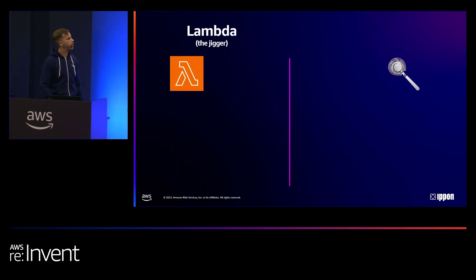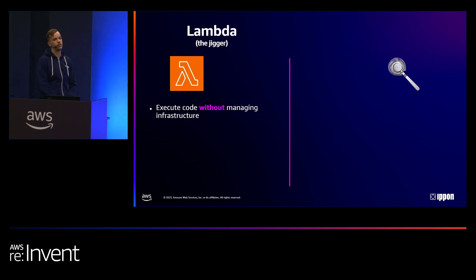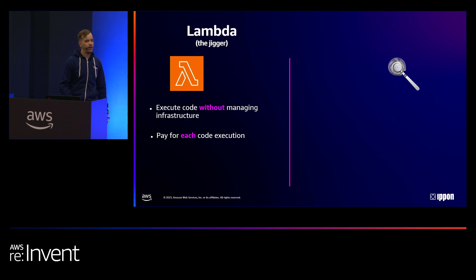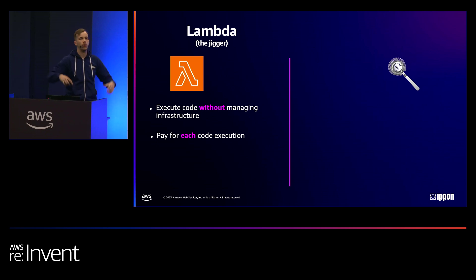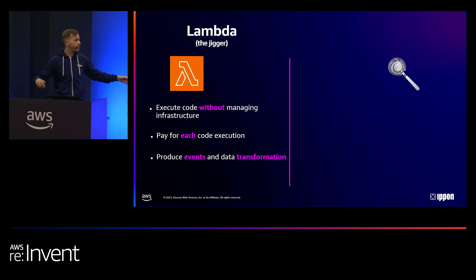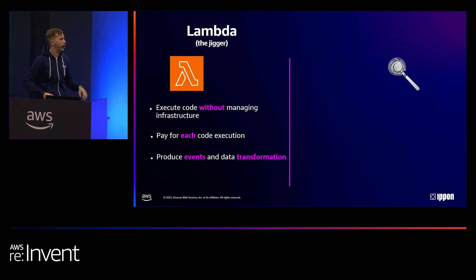If we go into the jigger part here, Lambda is an AWS service used to execute code without having to manage the infrastructure. Everybody loves serverless — you don't need an EC2 instance for this. You only pay for each code execution, not for a whole server running 24/7. In our case, I like to call it the jigger because we are building cocktails and mocktails — it is something that produces events and also serves as a data transformation layer.